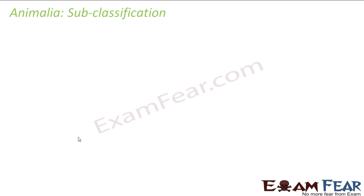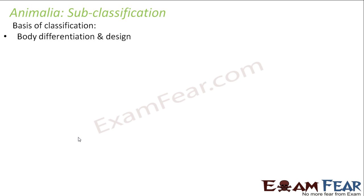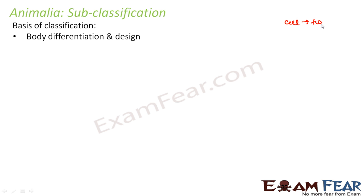So let us now see what forms the basis of subclassification of kingdom Animalia. The basis of classification here is body differentiation and design, similar to the Plantae kingdom. The basic unit of the body is the cell; cells can form tissues, tissues can form organs, organs can form organ systems, and organ systems together form the organism.